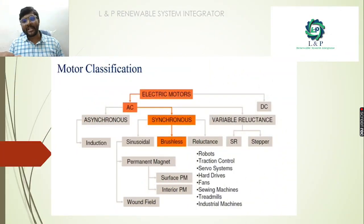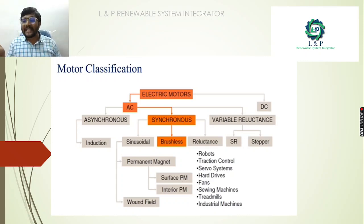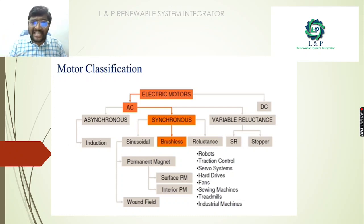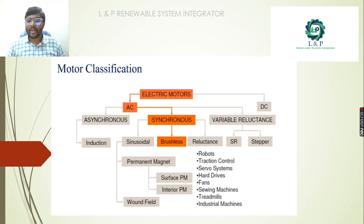Looking at the major classification, we can classify motors into AC and DC. On the AC side we have asynchronous and synchronous motors, and we also have variable reluctance motors. Going deeper into the synchronous category, we have brushless DC motors, reluctance motors, permanent magnet motors, and many more varieties.